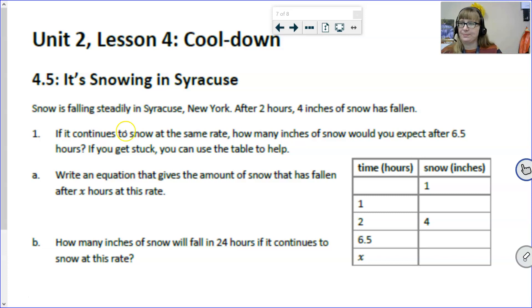Now, let's move on to our cool down. Snow is falling steadily in Syracuse, New York. After 2 hours, 4 inches of snow has fallen. I see some information. Good thing it's already there in the table. But, if it weren't, we could easily put it in the table. If it continues to snow at the same rate, how many inches of snow would you expect after 6.5 hours? It says if you get stuck, use the table. Just use the table. It is really helpful to always use that table to figure out how we're going across.